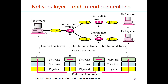The network layer provides end-to-end connections. We have seen the data links before and they can also provide some small network functionality. But if you want to build a very large network, what we call a wide area network, then you need a network layer. We see the links as providing hop-to-hop delivery between switches that operate on the network layer, also referred to as layer 3.